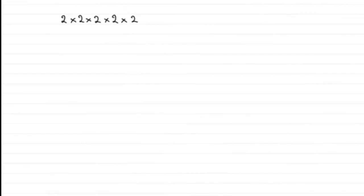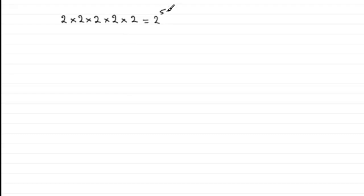Welcome to this video, which is an introduction on what is often termed indices or exponents. What I've got here is two repeatedly multiplied by itself five times over, and we write this for short as two with a little five written just up to the right-hand side of it. It's pronounced as two to the power five.